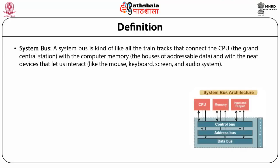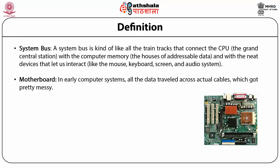A system bus is like train tracks connecting the CPU with computer memory and with devices that let us interact, like the mouse, keyboard, screen and audio systems. In early computer systems, all data traveled across actual cables which got messy. Large bundles of wires were organized using bus paths — which is where the term bus comes from. Nowadays, most of these wires are typically gold-plated traces or tiny flat wires on the computer's motherboard.